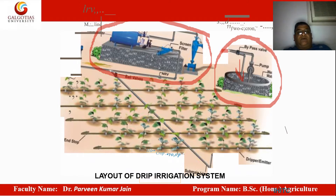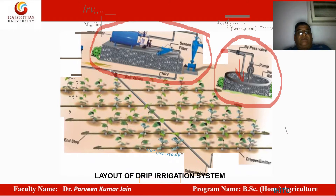The idea of filtration is to bring the water into a clean form, because the drip lines have a very micro diameter and if any impurities enter these drip lines, they may clog them and totally block the system. Beyond this is the distribution — the main line, then the sub mains and laterals.